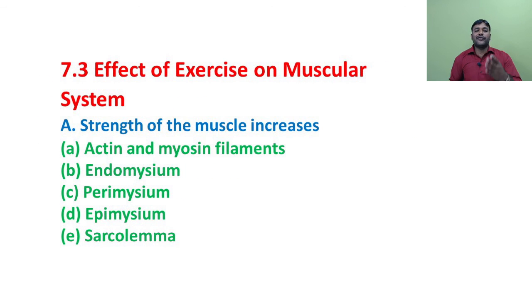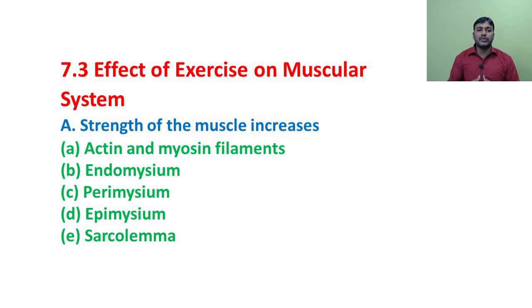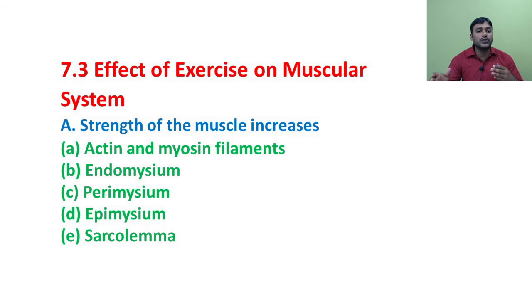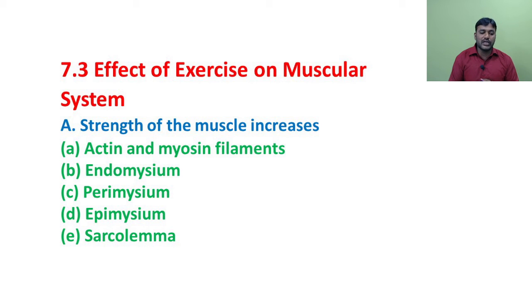Next: effect of exercise on the muscular system. Due to participation in long-term training programs, the development of the muscular system takes place. The training develops the capacity of an individual; the effects depend on the type of training. The following are the effects of exercise on the muscular system: strength of the muscle increases, along with changes in actin and myosin filaments, endomysium, perimysium, epimysium, and sarcolemma.